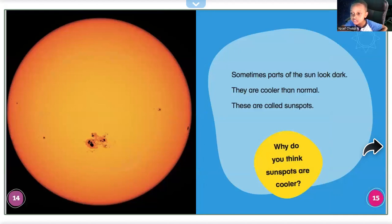Sometimes parts of the sun look dark. They are cooler than normal. These are called sunspots. Why do you think sunspots are cooler?